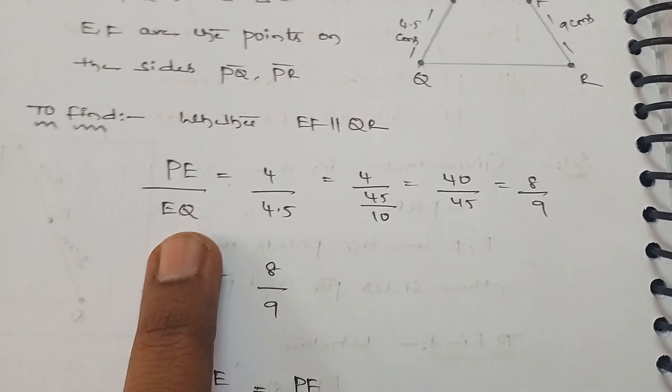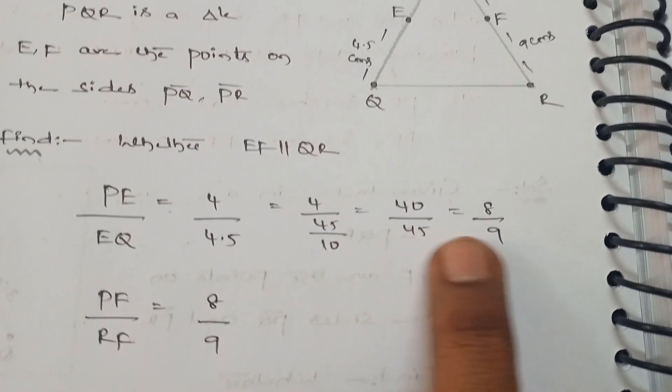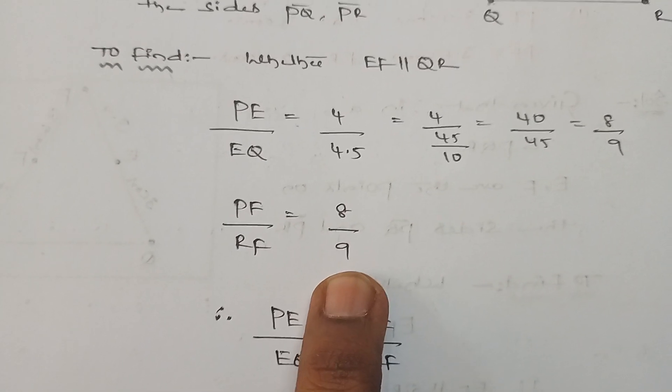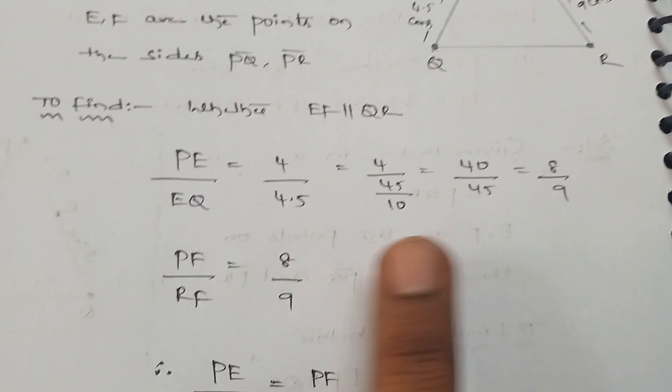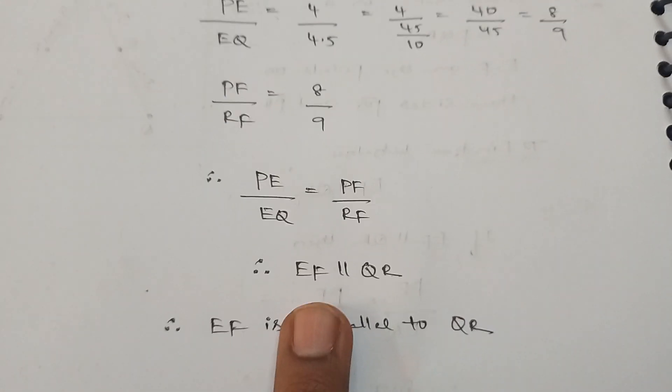So PE by EQ equals 4 by 4.5, we get 40 by 45, that equals 8 by 9. And PF by RF is given as 8 by 9. Therefore PE by EQ equals PF by RF. Therefore EF is parallel to QR.